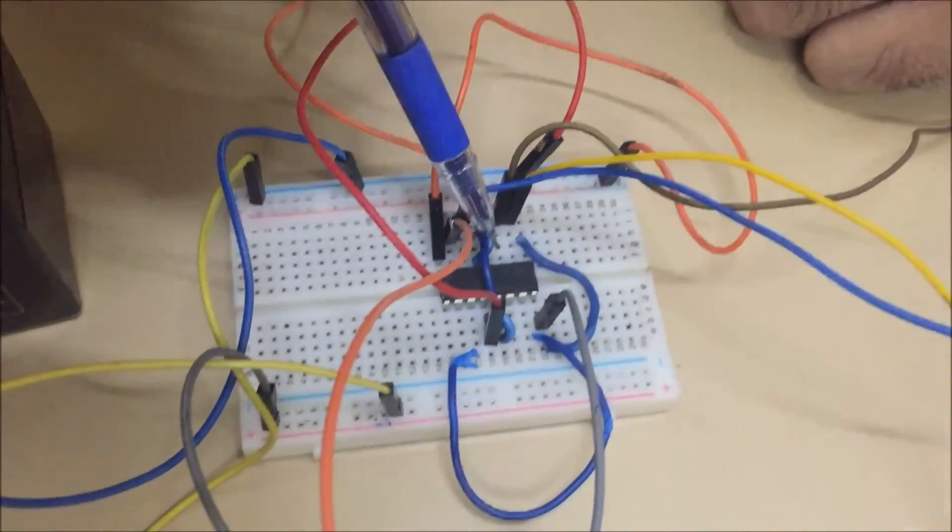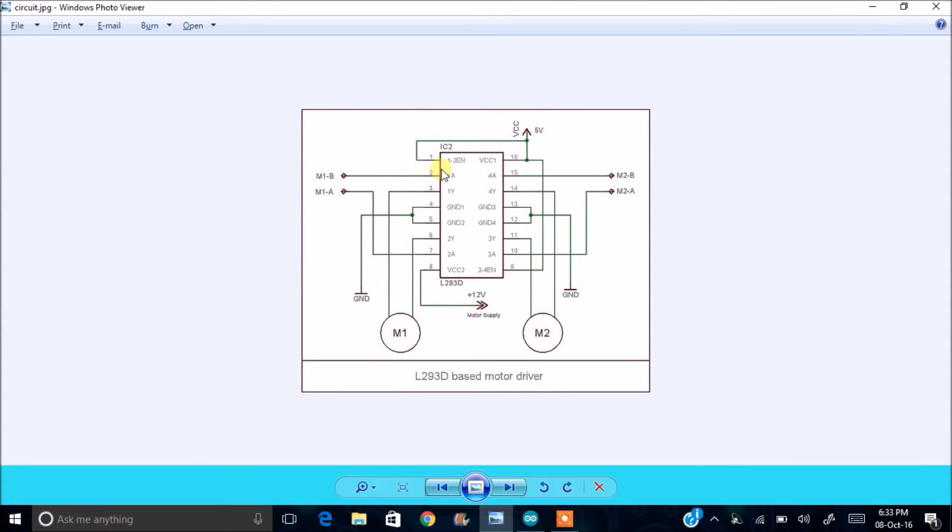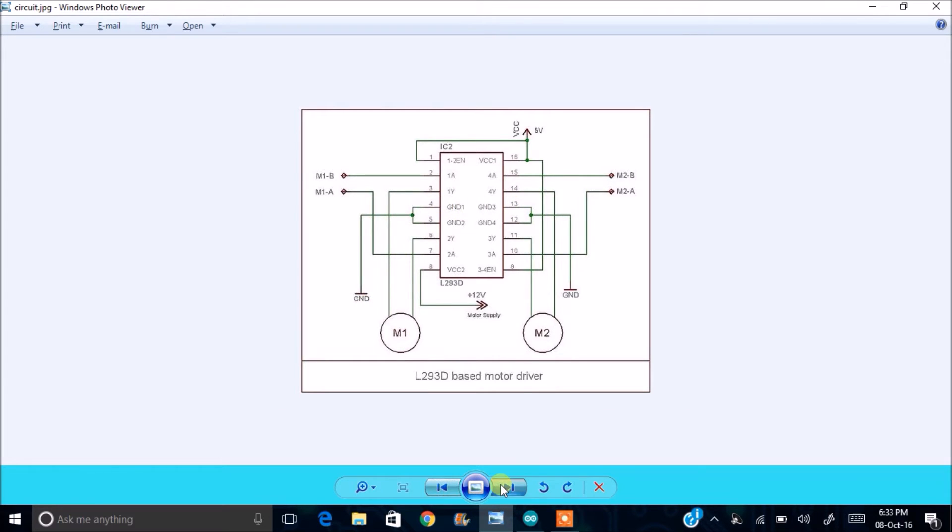So I am going to run a single motor. First I am going to run a single motor. So this is the circuit that we made. Pin number 1, 16, and 9 are connected to 5V. Pin number 8 is given the 12V supply. The output devices are connected to 3, 6, 14, 11, and 14. And inputs are given to 2, 7, 15, and 10. Sorry, the output was connected to 11 and 14. And pin number 12, 13, 4, 5 are grounded. So this circuit looks like this.